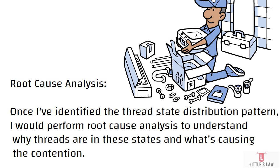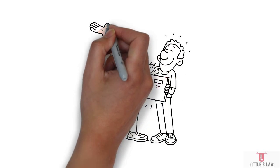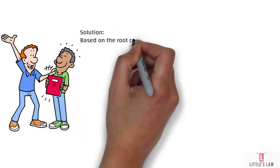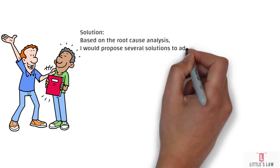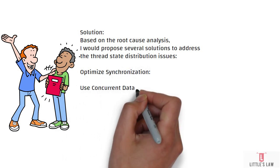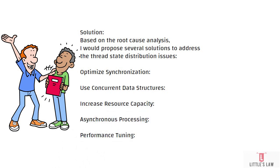So far you have identified the thread state distribution and performed the root cause analysis. Now it's solution time. Based on the root cause analysis, you must propose several solutions to address the thread state distribution issue. The first solution is optimizing synchronization: if contention is caused by synchronized blocks or locks, you would review the code to minimize the duration of critical sections and reduce the likelihood of threads waiting on locks.